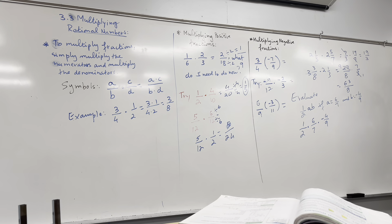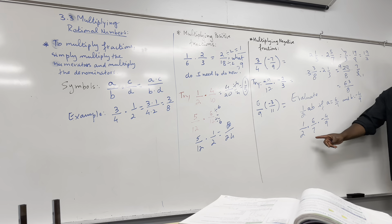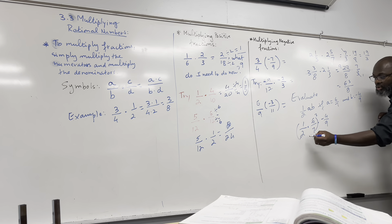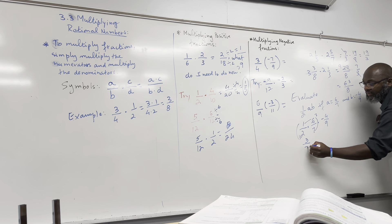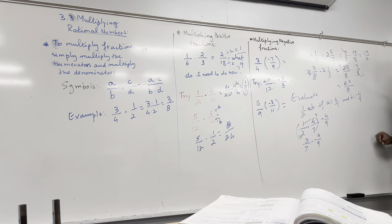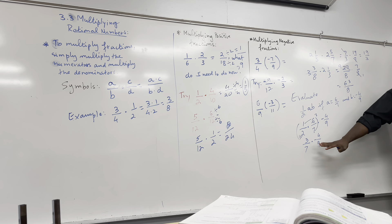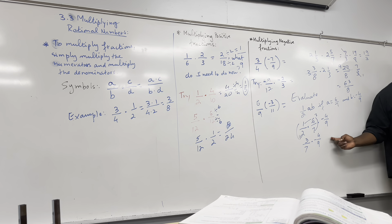You have to turn mixed fractions into improper fractions first, then simplify. Let's try three and three-eighths times two and one-third. Three and three-eighths: three times eight is 24, plus three is 27, so 27 over eight. Two and one-third: two times three plus one is seven, so seven over three. Three goes into 27 nine times, so cancel to get nine over eight times seven over one, which is 63 over eight.